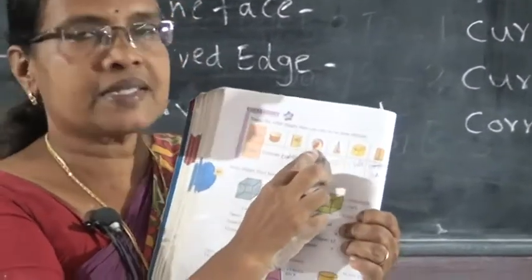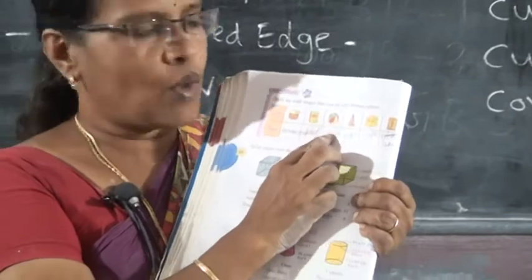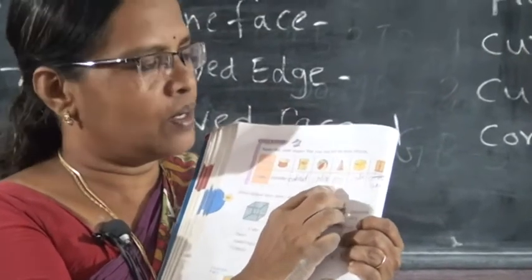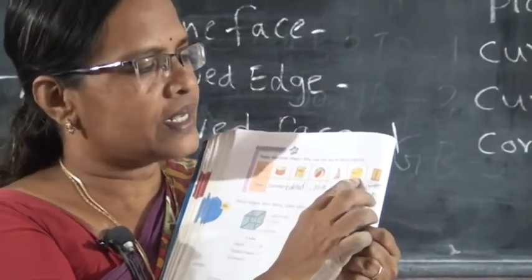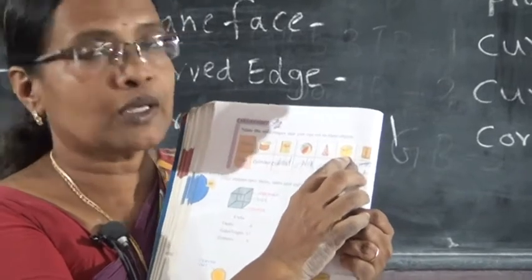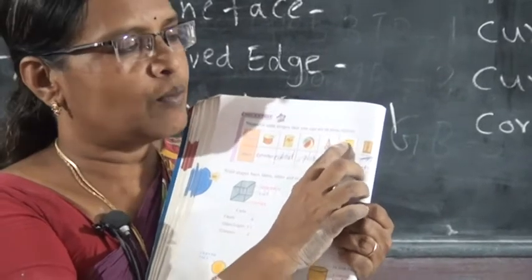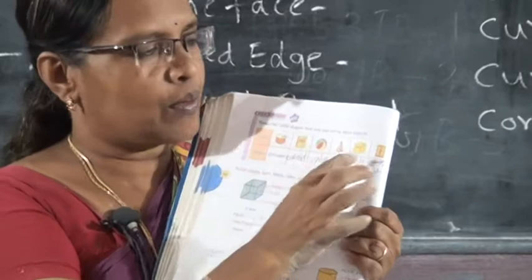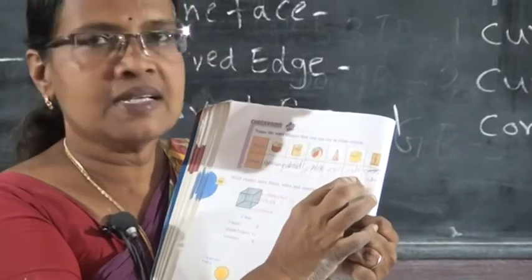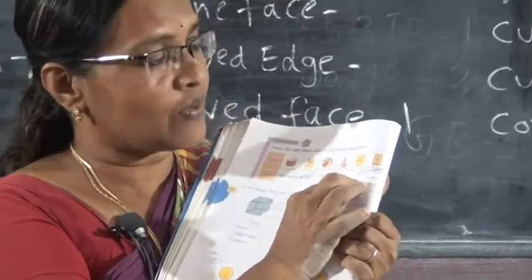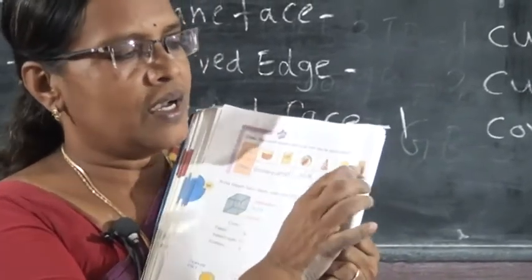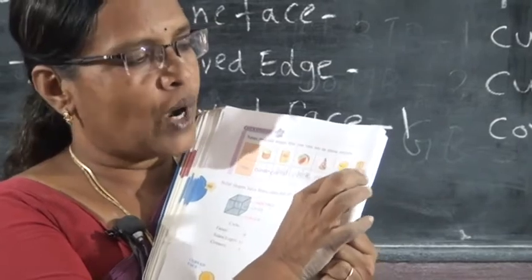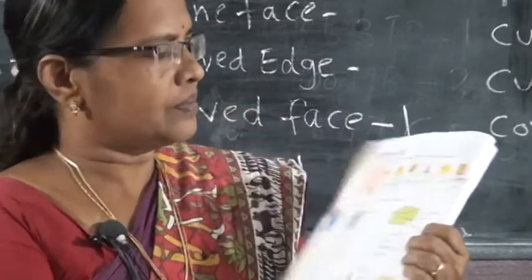Then, cuboid. Next, ball — sphere. Then, cone. Next, cube — box, all sides are equal — cube. Last one, cuboid.